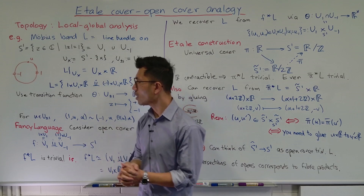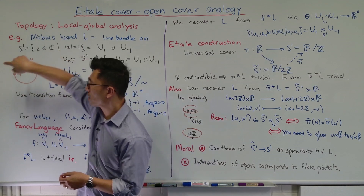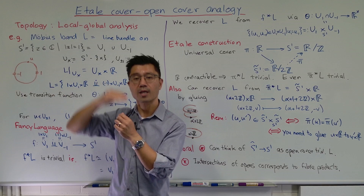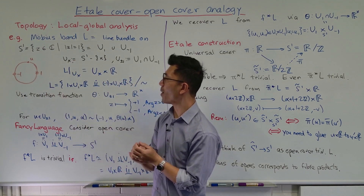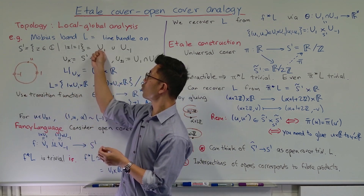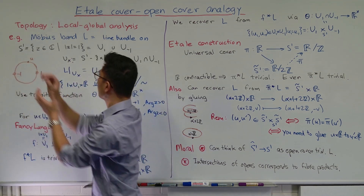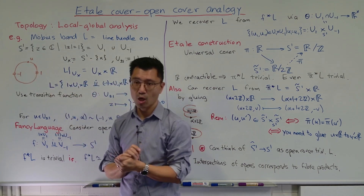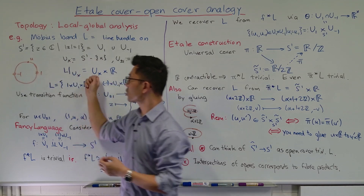It is not the trivial bundle, but one thing you can do is that if you cut this Möbius band, you can flatten it out and it will be trivial — it will be just an open interval cross R. The way we'll do that mathematically is that we're going to look at an open cover of this S1: the open cover U1 union U-minus-1. U1 will be where you just remove the point 1, and U-minus-1 where you just remove minus one. And if you restrict this line bundle to either of those two open sets, you will get something trivial — L restricted to Ux is just Ux cross R.